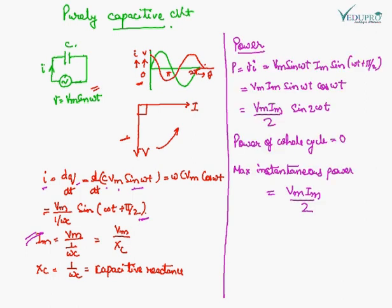The power of the capacitive circuit is V into I, where voltage is VM sine omega t and current is IM sine of (omega t plus pi by 2). Solving this, the average power over the whole cycle is zero. The maximum instantaneous power is VM IM upon 2.